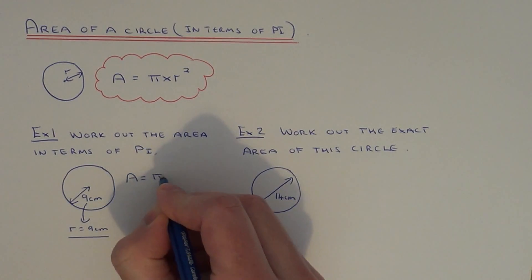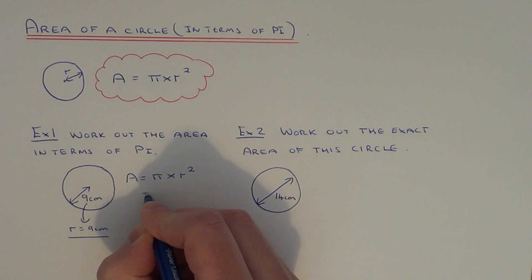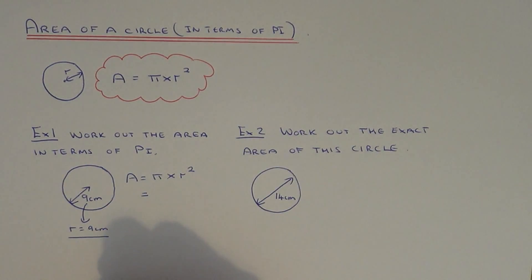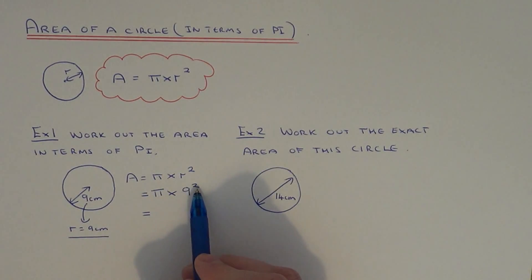Let me just copy the formula down again. Area equals pi times radius squared. If we substitute in our radius, which is 9, our next line will be pi times 9 squared. We can work out what 9 squared is, which is 81, because it's 9 times 9.